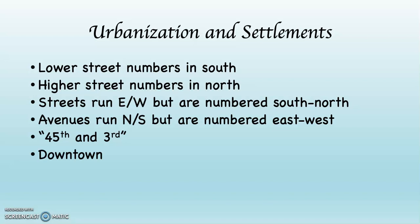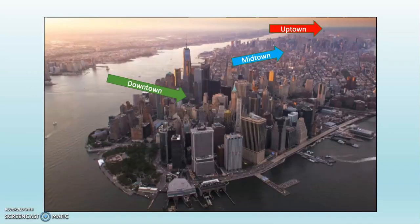Downtown is the lower street numbers. Midtown is the middle street numbers, and uptown would be the higher street numbers. If you take a look at this photograph, you can see the green arrows pointing at downtown where the new World Trade Center is, which is also in the area where Wall Street is. Then you can see the blue arrow pointing at midtown — if you look carefully, you can see the Empire State Building right in the middle of midtown. And then the red arrow points uptown, where the architecture is less vertically developed. It's still a lot of high-rise buildings, but not as big as downtown and midtown.